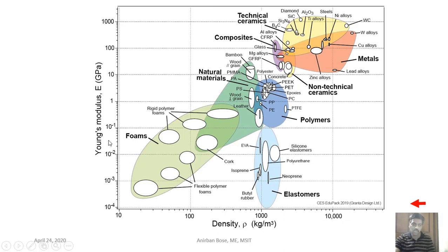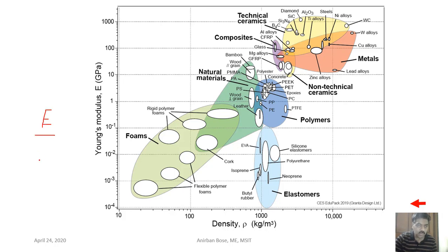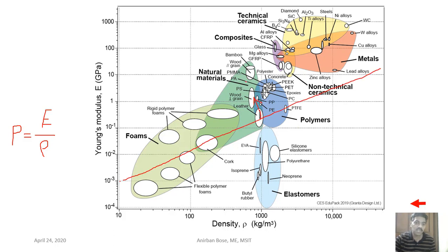We now go to the Ashby chart of Young's modulus E versus density ρ. On that chart we plot E/ρ. Since it is a log-log plot, we take the logarithm: log(E) = log(ρ) + log(P). The same procedure follows — draw the line, shift it to increase P, and eliminate materials that fall below the line.